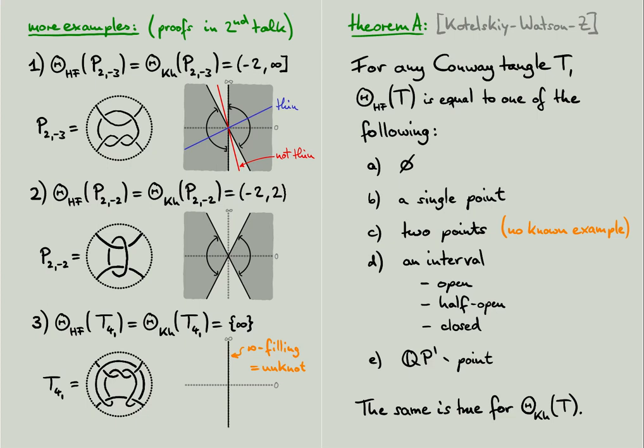Fourth, the spaces of thin fillings can also be closed intervals. They can be open, they can be half open, but there are also examples for which we obtain closed intervals. And finally, the spaces can also be everything minus a point. See the rational tangle, but there are also more interesting examples with this behavior.